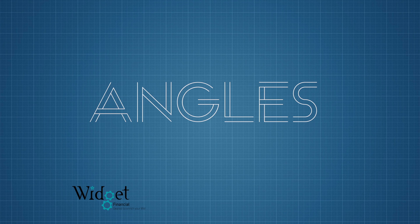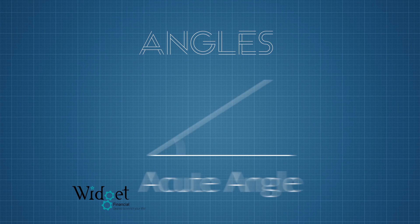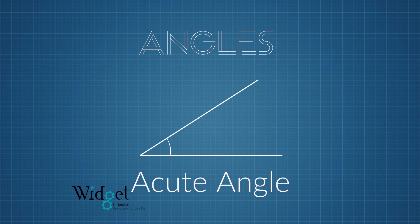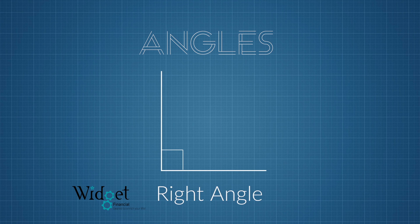An angle measures the size of a corner on a shape. There are three basic types of angles. There is an acute angle, which is an angle that is less than 90 degrees, a right angle, which is an angle that is exactly 90 degrees.